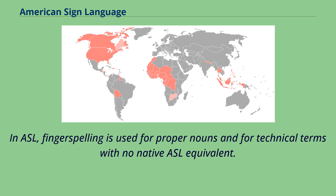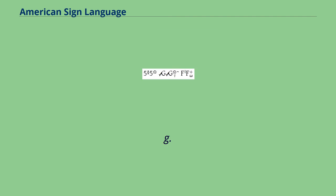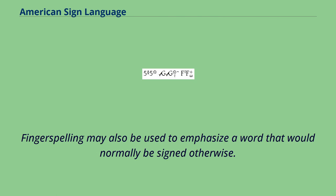There are also some other long words which are fingerspelled, either very short English words or abbreviations of longer English words, such as 'N' from English 'on,' and 'APT' from English 'apartment.' Fingerspelling may also be used to emphasize a word that would normally be signed otherwise.